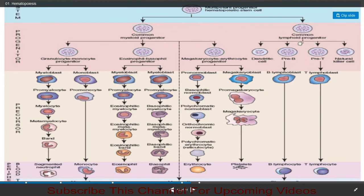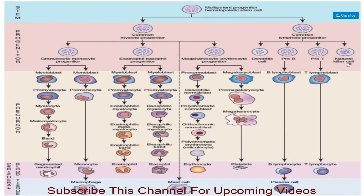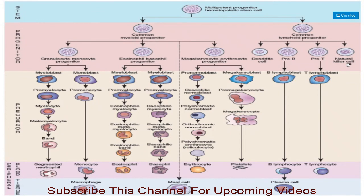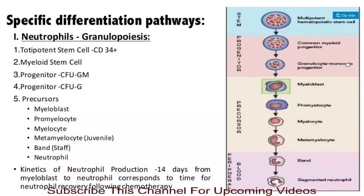The common lymphoid progenitor cells produce dendritic cells, pre-B cells, pre-T cells, and natural killer cells. Pre-B cells give rise to B lymphocytes and plasma cells, while pre-T cells give rise to T lymphocytes. This concludes the hematopoiesis diagram; in the next part of this lecture we will see the specific differentiation pathways.